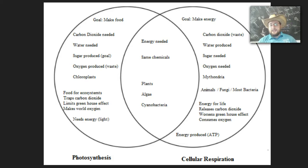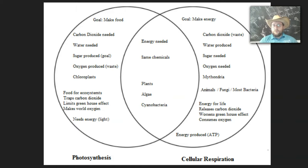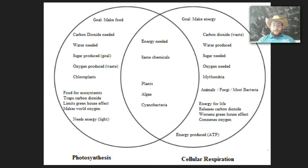Last but not least, photosynthesis needs energy, which comes in the form of light, and cellular respiration makes energy in the form of ATP that is used by the cells to perform all the chemistry of life. Do remember that plants, algae, and cyanobacteria do both processes — they also need cellular respiration to break down the food that they make themselves. While animals, fungi, and most bacteria cannot actually make their own food — they have to break it down.